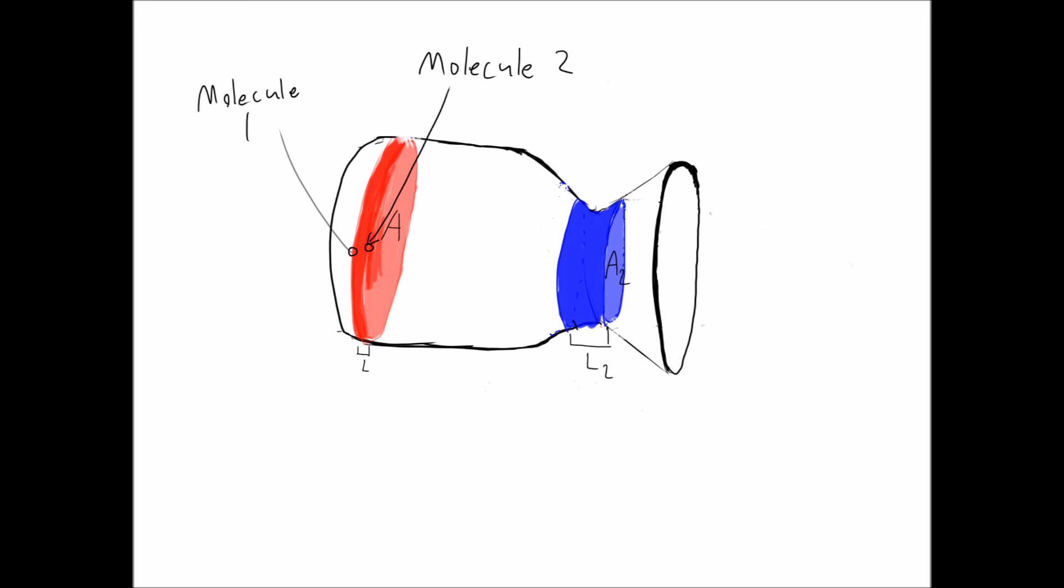Now imagine two molecules in the red section. They are at opposite ends of the red cylinder, one on top and one on the bottom. They travel from the red section in the combustion chamber to the blue section in the throat. Remember that the volume of the red section is the same as the volume of the blue section. The molecules end up in the same position on the cylinders as they started.